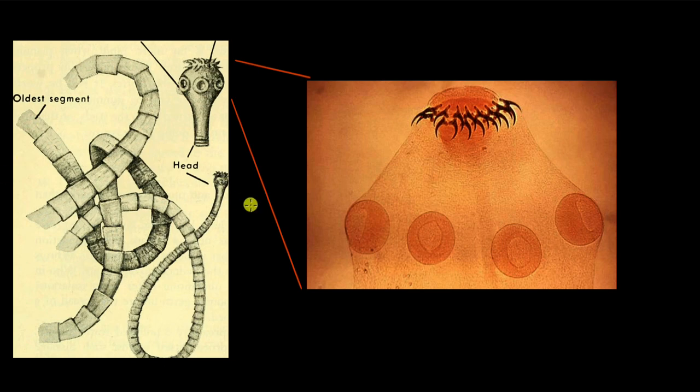The tapeworm are parasites that are found in the small intestine. So what they do is they cling to the wall of the small intestine so that they are not washed off with the content. So they want to hold on to the wall through these structures.